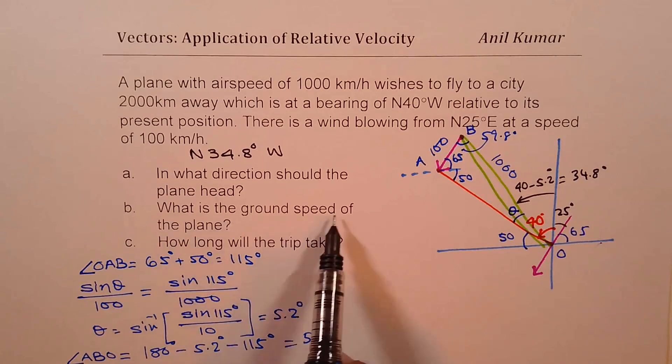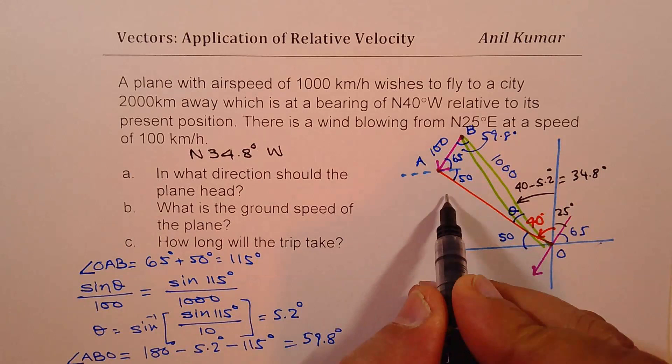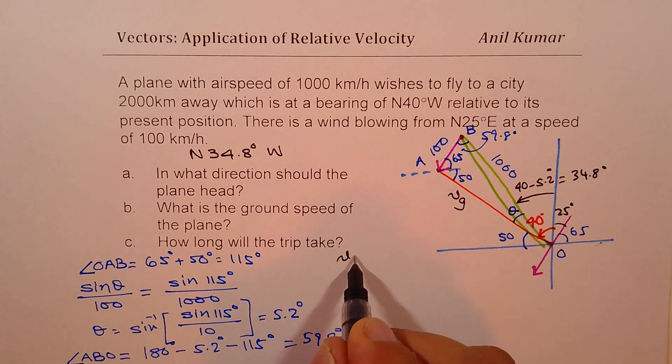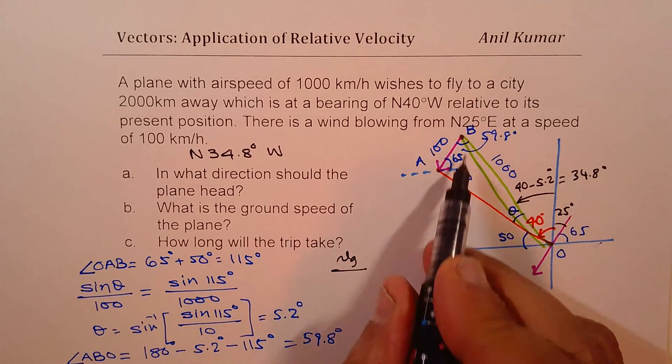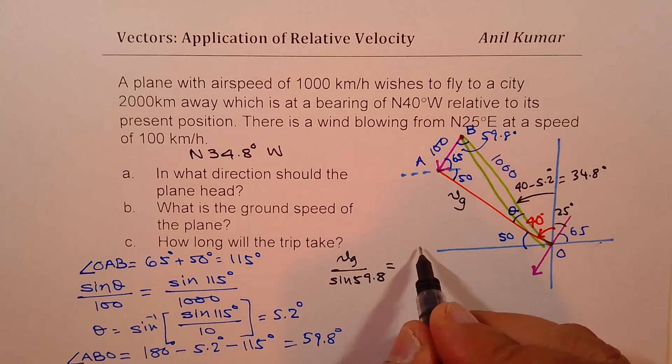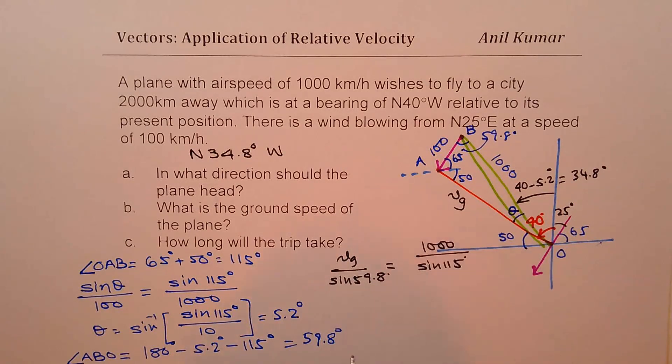What is the ground speed of the plane? So the ground speed, let's say this is VG, the orange line is the ground speed. To find the ground speed, we can actually use sine law. So VG, ground speed, over the angle opposite to this side is 59.8. Sine of 59.8 is equal to known speed of 1000 divided by sine of 115 degrees. So VG is equal to 1000 times ratio of sine of 59.8 over sine of 115 degrees. So let's calculate this answer.